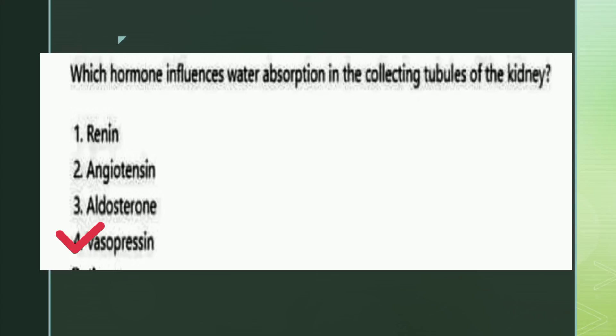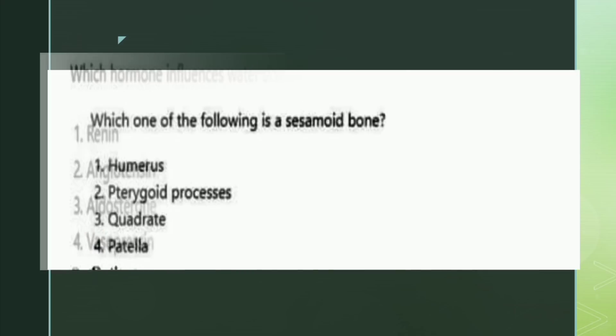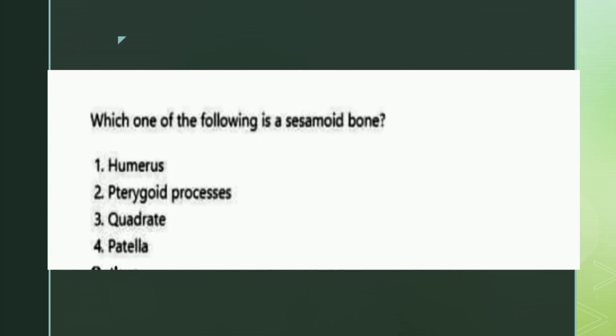The next question: which one of the following is a sesamoid bone? The options are humerus, pterygoid processes, quadrate, and patella. The right answer is option four: patella.